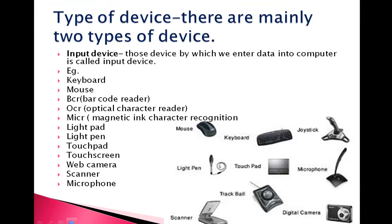Now we will talk about the types of devices. There are mainly two types of devices in a computer system. The first is the input device — those devices by which we enter data into the computer are called input devices. Examples include keyboard, mouse, barcode reader, optical character reader, MICR (Magnetic Ink Character Recognition), light pen, light pad, touchpad, touch screen, webcam, scanner, and microphone.